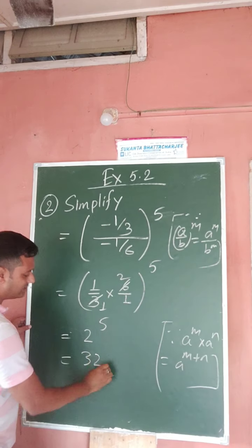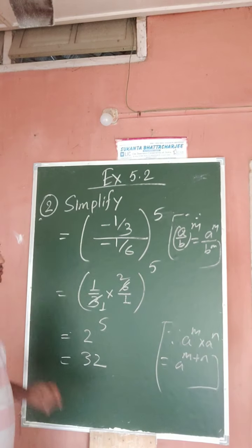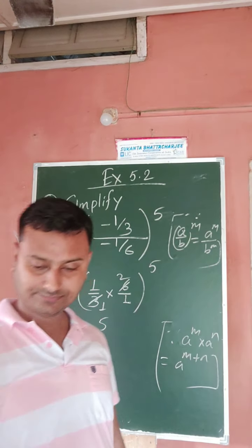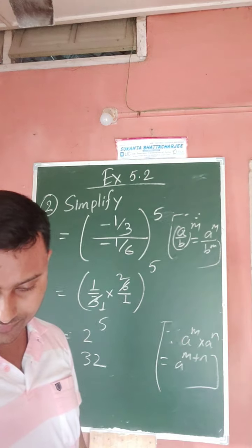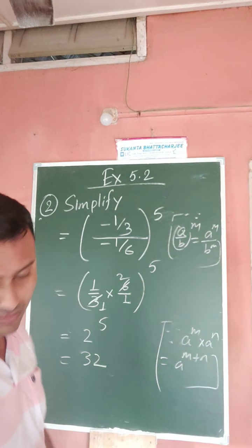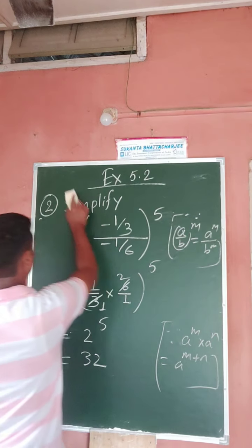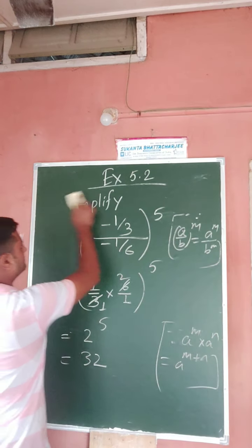Two to the power five — what is the answer? The answer is 32. Clear? I think we have to understand this one.